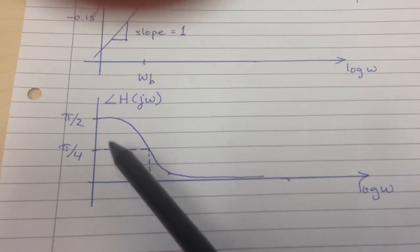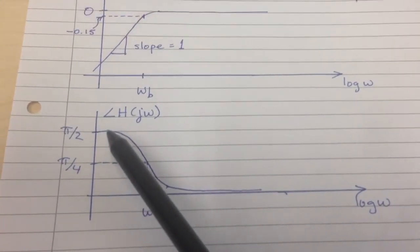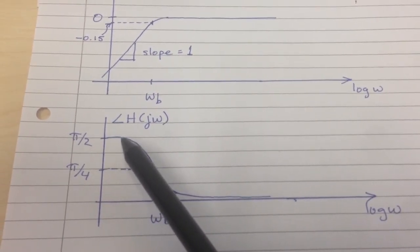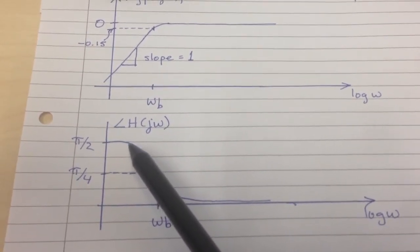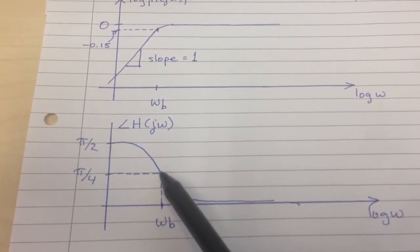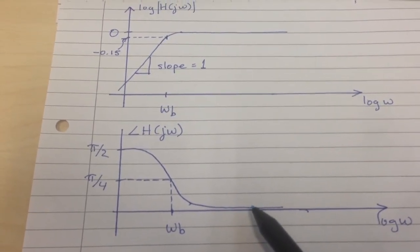Similarly here, if you look at the phase, at low frequencies, there's a phase shift of pi over 2, meaning the output voltage is pi over 2 shifted relative to the input. At the break frequency, there's a pi over 4 shift, and then above the break frequency, there's no phase shift.